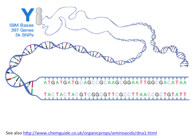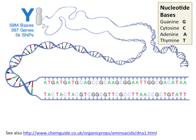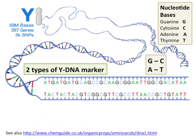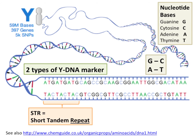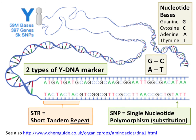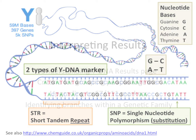Here is the Y-DNA — those are the four bases: G binding with C, A with T — and there are two types of markers: the STR marker and the single nucleotide polymorphism, the SNP. We'll be looking at both of those in today's presentation.